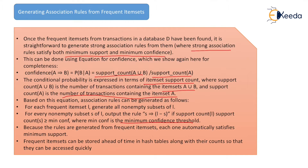The frequent itemsets can be stored ahead of time in a hash table along with their counts so that they can be accessed quickly. In this video we have seen how we can generate association rules using the confidence equation P(B|A), using the support count of A and B to check the frequency of an itemset and, depending on that, form the association rules.